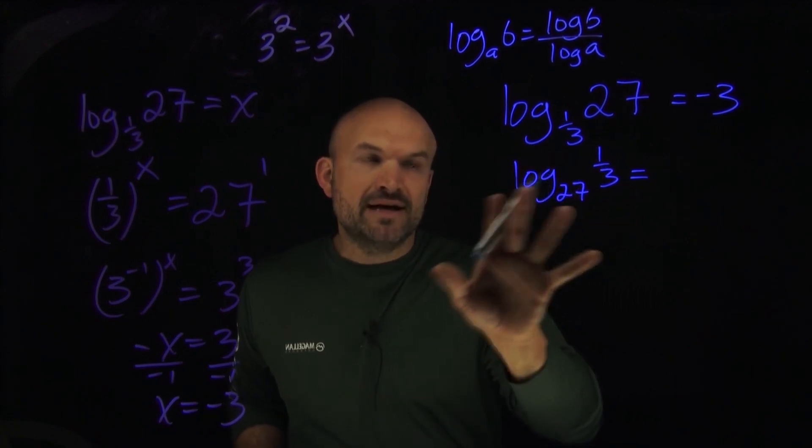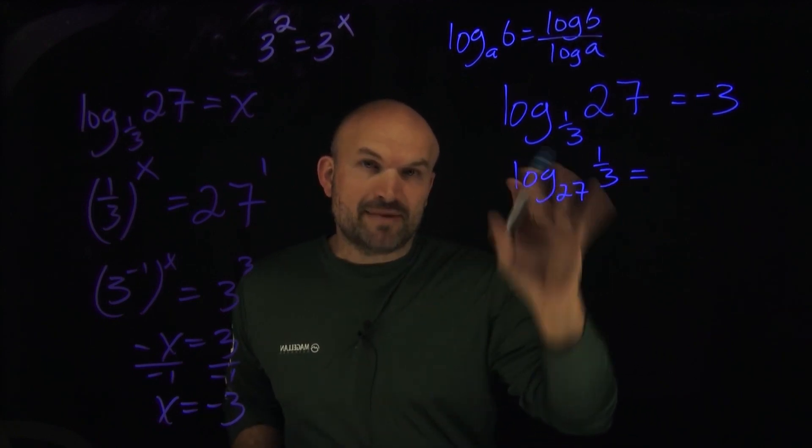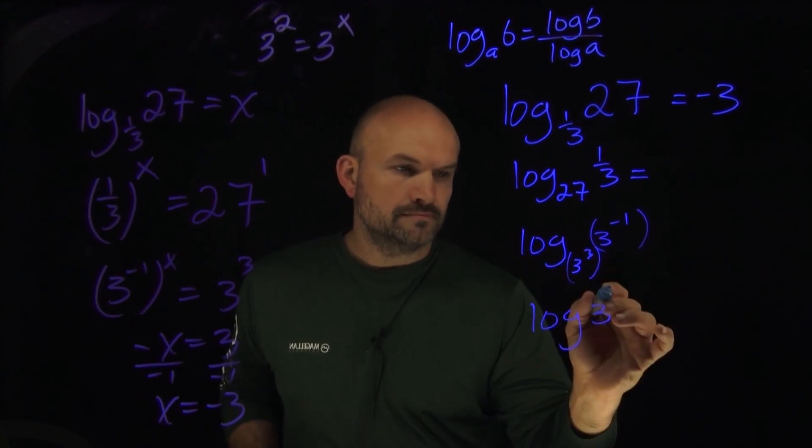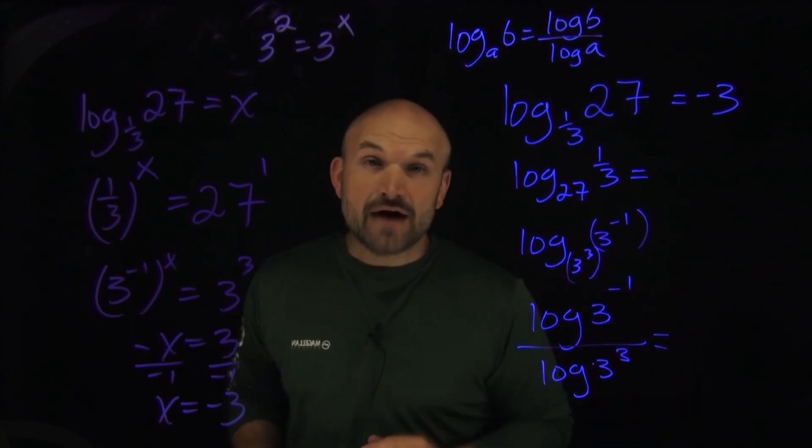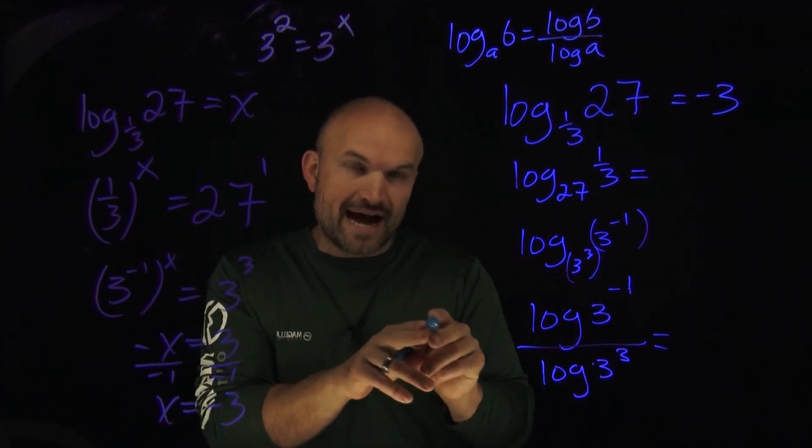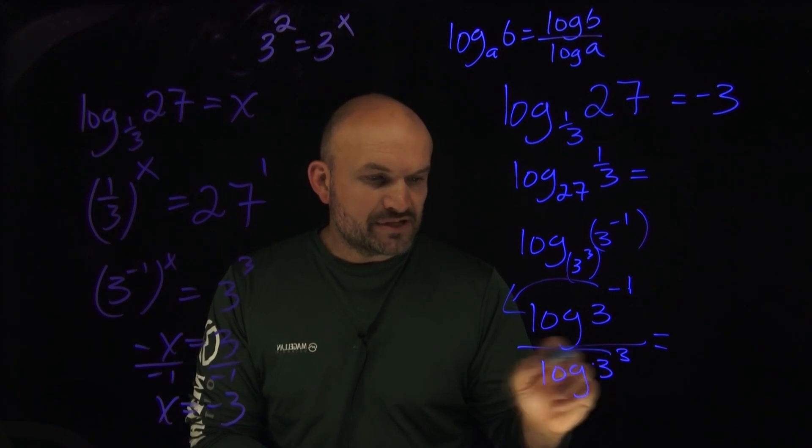What I'm simply going to do is I'm going to rewrite my logarithm here. I'm going to change these up and then I'm going to use the change of base formula. Now you can see what I can do is I can now use the power rule of these logarithms. I can bring the negative one out in front and I can bring this three out in front.